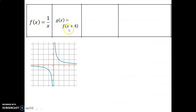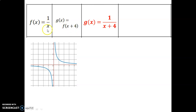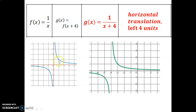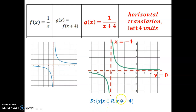Next, we replace x with x plus 4 in the denominator. This represents a horizontal shift — x plus 4 means left 4 units. The graph moves left 4, so the vertical asymptote moves to x equals negative 4, while the horizontal asymptote stays at y equals 0 since there's no vertical shift. Domain: all reals except x ≠ −4. Range: all reals except y ≠ 0.